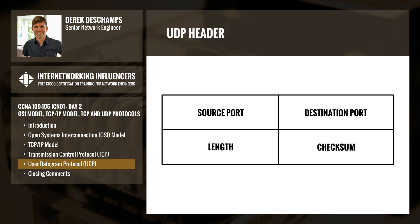A UDP header contains both source and destination port fields, length, as well as a checksum field. You will notice that it contains much less information than a TCP header. However, both TCP and UDP contain source and destination ports as well as a checksum field.